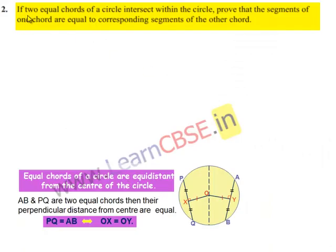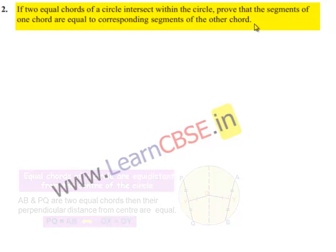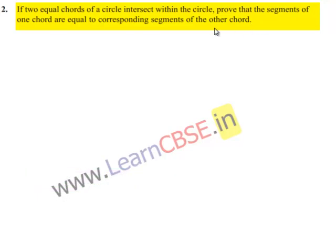Coming to the second question: if two equal chords of a circle intersect within the circle, prove that the segments of one chord are equal to the corresponding segments of the other chord.